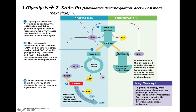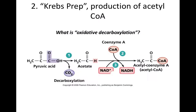In aerobic respiration, pyruvic acid still has lots of high-energy electrons, so the cell continues to rip off those electrons. Following glycolysis, we have a second stage called the Krebs prep, or production of acetyl-CoA. Let's look at that next step.